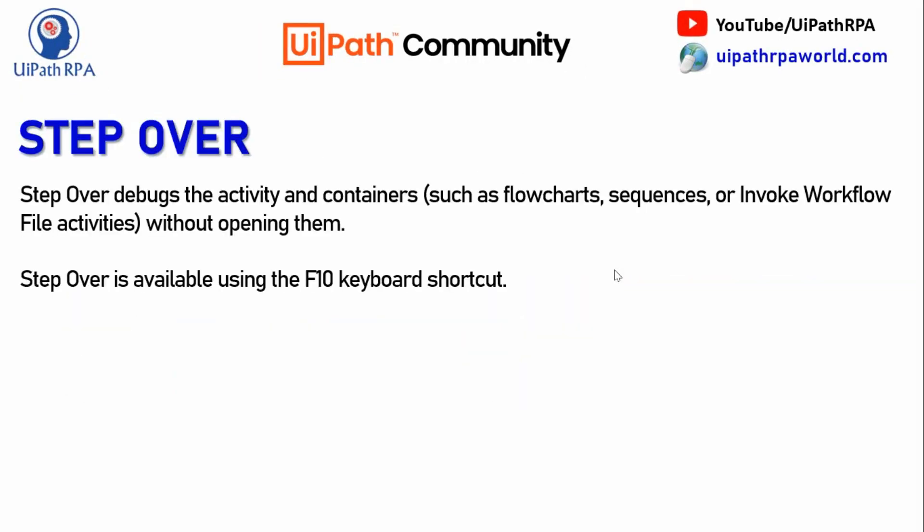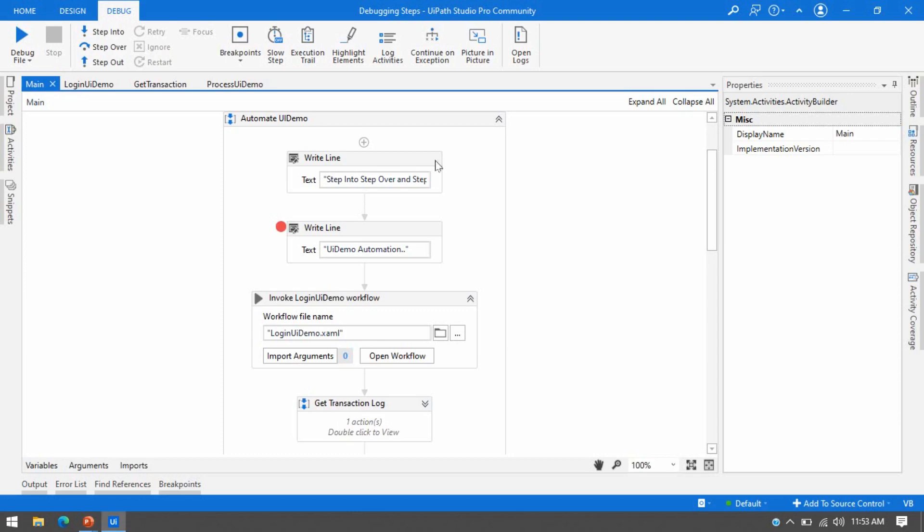Now the next is Step Over. Step Over debugs activities and containers such as flowcharts, sequences, or Invoke Workflow File activities without opening them. It means it will not open any container or Invoke Workflow File activity. Unlike Step Into, which opens that workflow in a different tab in read-only mode, Step Over will directly complete whatever activities are used inside that container or workflow. The shortcut key is F10.